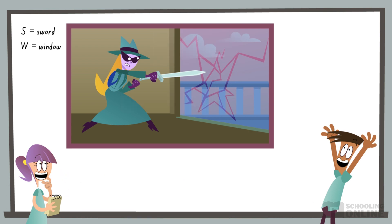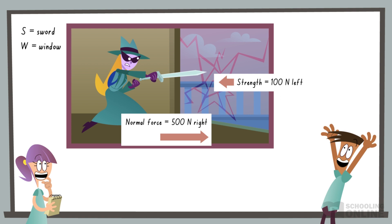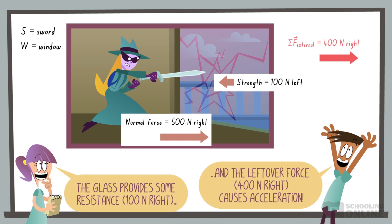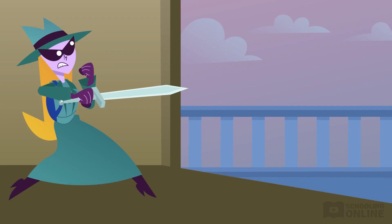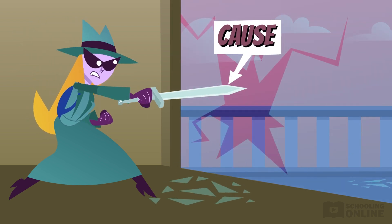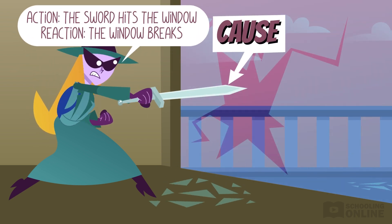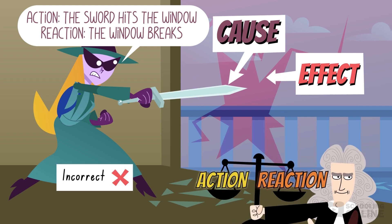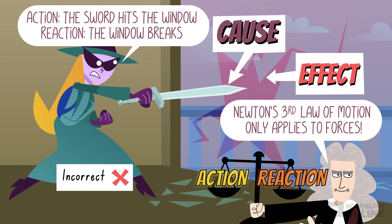When the sword pushes 500 newtons right, 100 newtons is used to break the chemical bonds in the glass, and the remaining 400 newtons is used to accelerate the glass shard. Before finishing, let's consider the statement: 'the action is Carmen pushes the sword into the window, and the reaction is the window breaks.' This statement is incorrect because Newton's third law does not apply to events and causality. Instead, it only describes the forces acting between two objects at some instant in time.